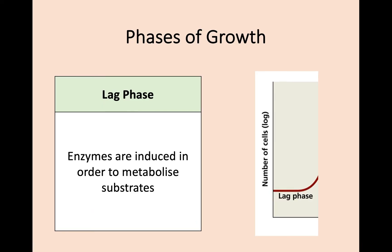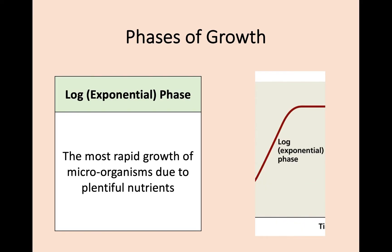First, the lag phase: this is where enzymes are induced in order to metabolize the substrates. There's no real growth going on here, but we're preparing for the growth of microorganisms and for the population to increase. Next we have the log phase, which is a rapid growth of microorganisms due to plentiful nutrients and the right conditions for growth.